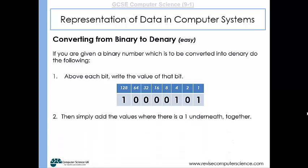Then all we need to do is add the values where there's a one underneath. Here we've got a one under the one, a one under the four, and a one under the 128. So this binary number represents one lot of 128, one lot of four, and one lot of one added together. 128 plus 4 plus 1 gives us 133. So that binary number's denary value is 133.